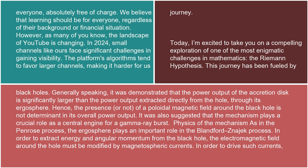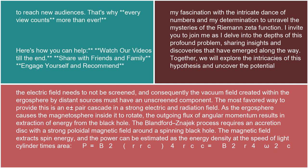In order to drive such currents, the electric field needs to not be screened, and consequently the vacuum field created within the ergosphere by distant sources must have an unscreened component. The most favored way to provide this is an e⁺/e⁻ pair cascade in a strong electric and radiation field. As the ergosphere causes the magnetosphere inside it to rotate, the outgoing flux of angular momentum results in extraction of energy from the black hole.